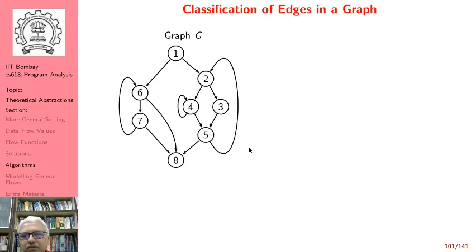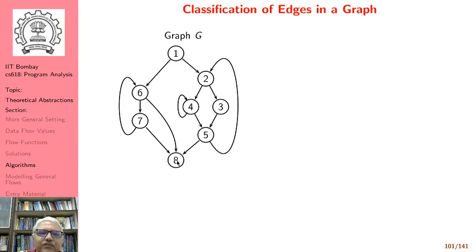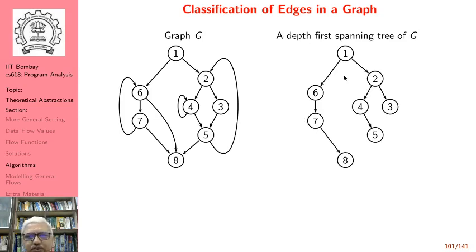To understand the round robin method and its complexity, we need to understand different kinds of edges in a graph. We have a certain graph G which looks like a control flow graph. In all control flow graphs, we have a unique entry node and a unique exit node — the entry node has no predecessor and the exit node has no successor. We distinguish between different kinds of edges based on constructing a depth first spanning tree of G. Note that there can be multiple spanning trees.